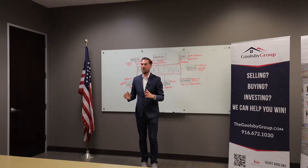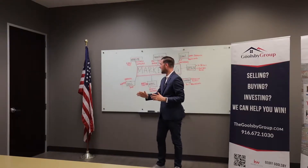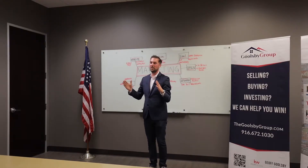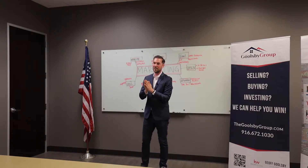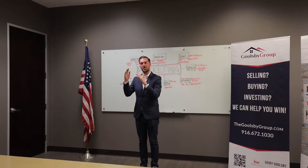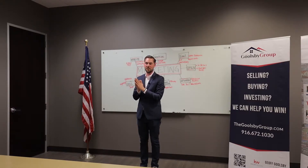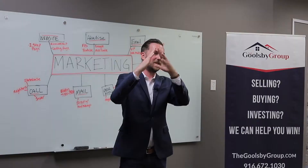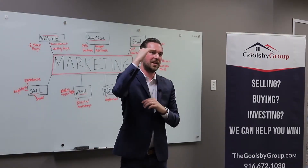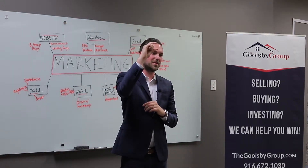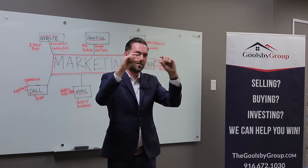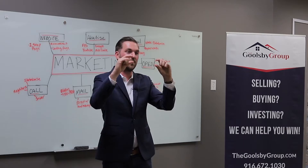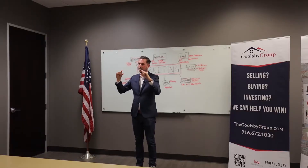When you list your home for sale, your pricing strategy really falls into three areas. There's this triangle: you have the top, the small sliver at the top, which is the absolute highest price. You have the middle of the triangle, which is the fair price. And you have the lowest.